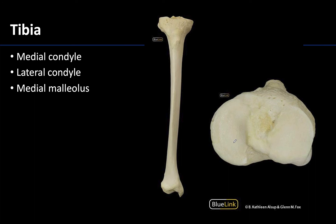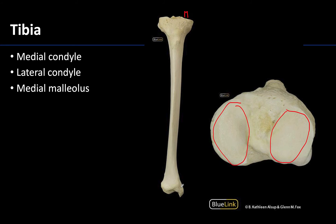Moving to the tibia, which is important for not only the knee joint but also the ankle joint — this is the medial and weight-bearing bone of the leg. The proximal end will be involved with the knee joint, allowing the femoral condyles to sit on their own condyles. You can see just how shallow these condyles are, so the fit between the femoral condyles and the tibial condyles is not a very tight fit. The way I quickly differentiate between the two is that the medial condyle is always on the same side as the medial malleolus, so this will always be the medial condyle and this will be the lateral condyle.